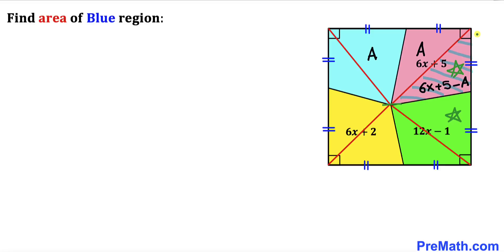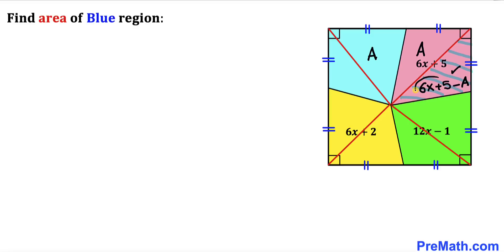Now let's focus on this next pair of triangles. Once again their bases are the same and their heights are the same, so we conclude the area of this triangle equals the area of this triangle. We know that triangle area is 6x plus 5 minus a, so this corresponding triangle is also 6x plus 5 minus a.